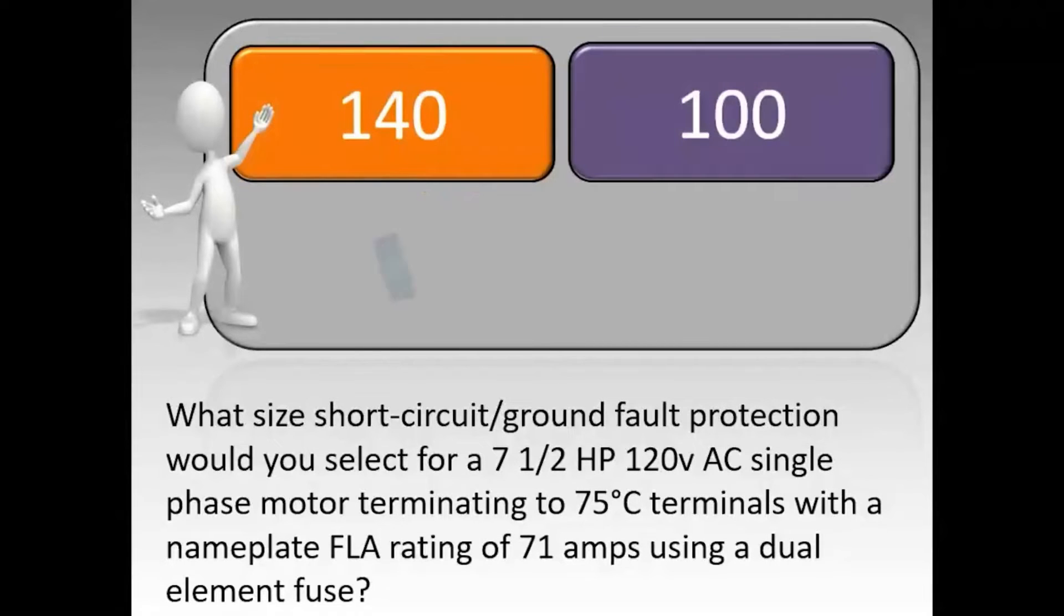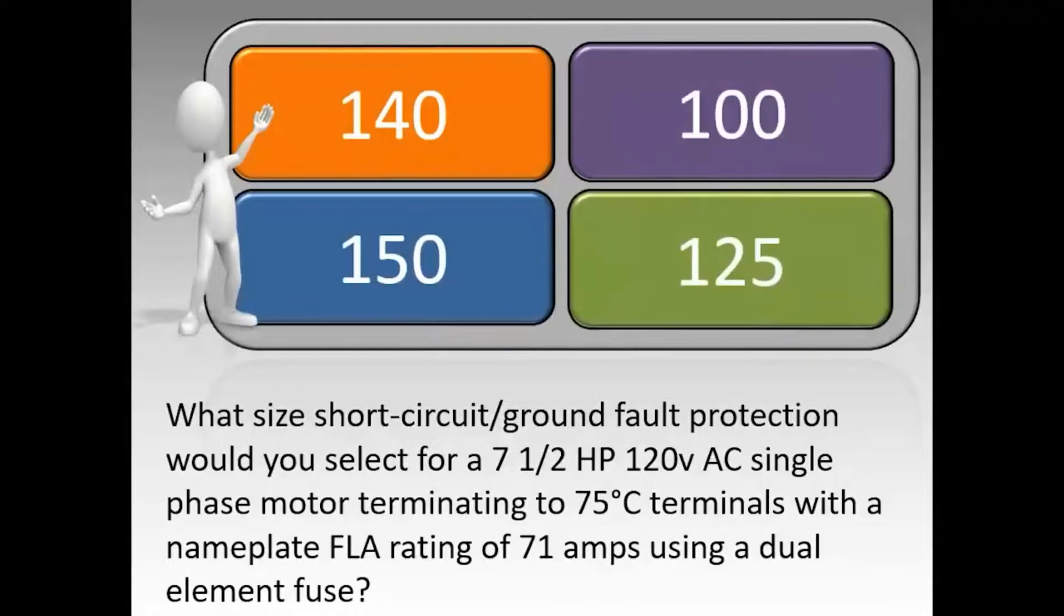What size short circuit ground fault protection would you select for a 7.5 horsepower, 120 volt AC single phase motor terminating to 75°C terminals with a nameplate FLA rating of 71 amps using a dual element fuse?